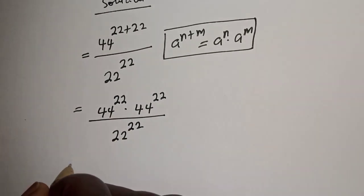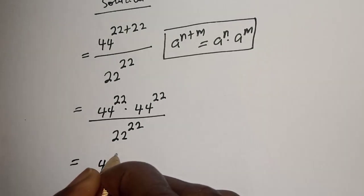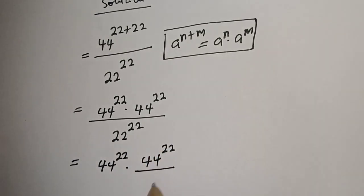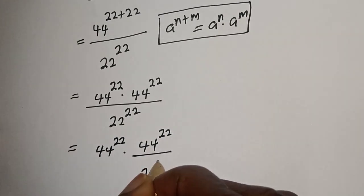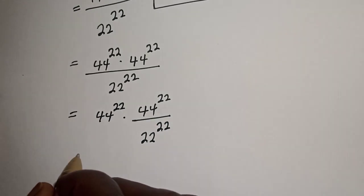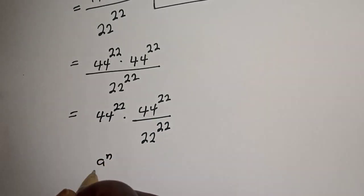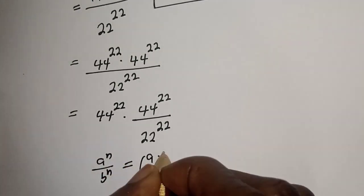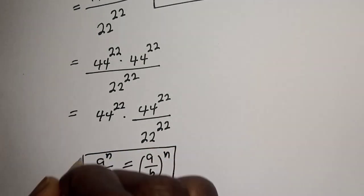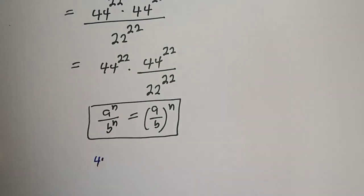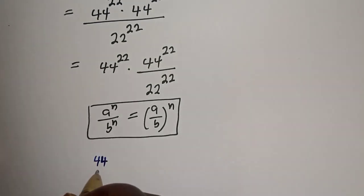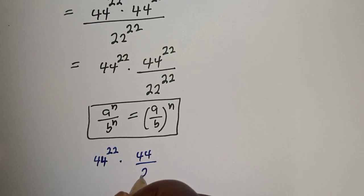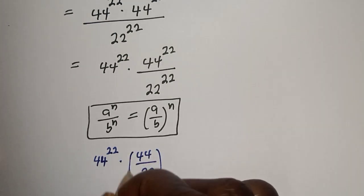We can split this as 44 raised to power 22 multiplied by 44 raised to power 22 divided by 22 raised to power 22. Take note of this rule: a raised to power n over b raised to power n is equal to a over b raised to power n. This gives us 44 raised to power 22 multiplied by 44 over 22 to the power of 22.